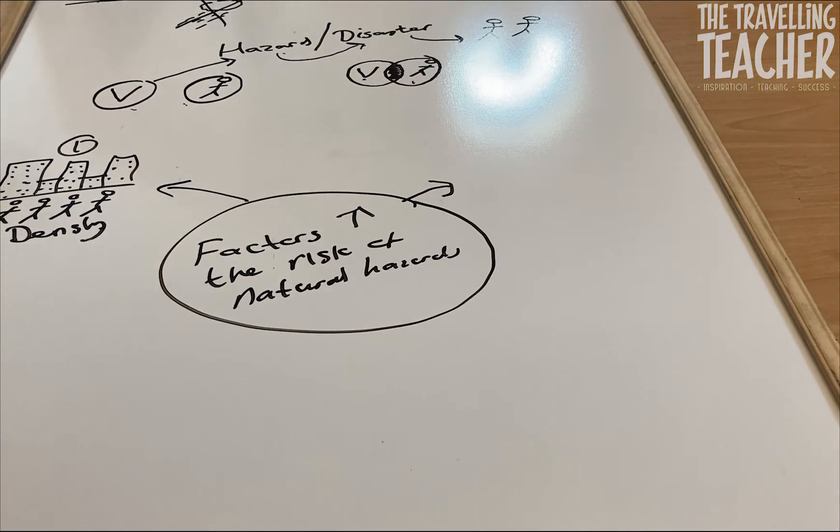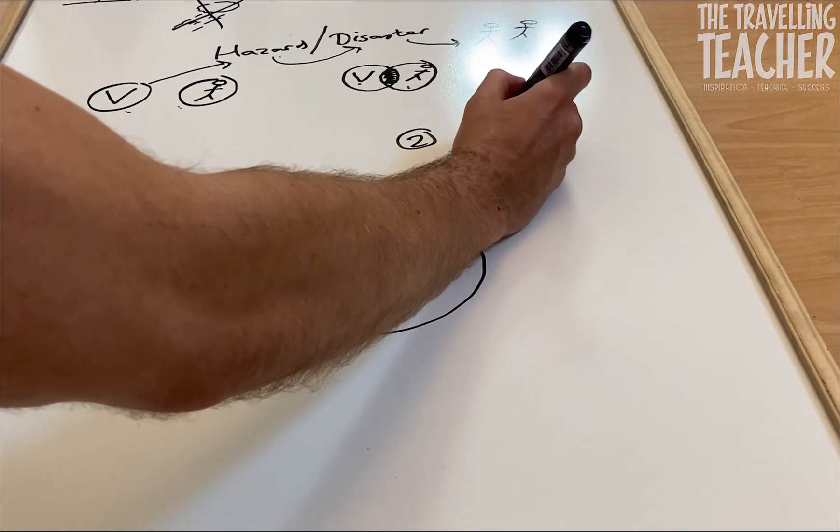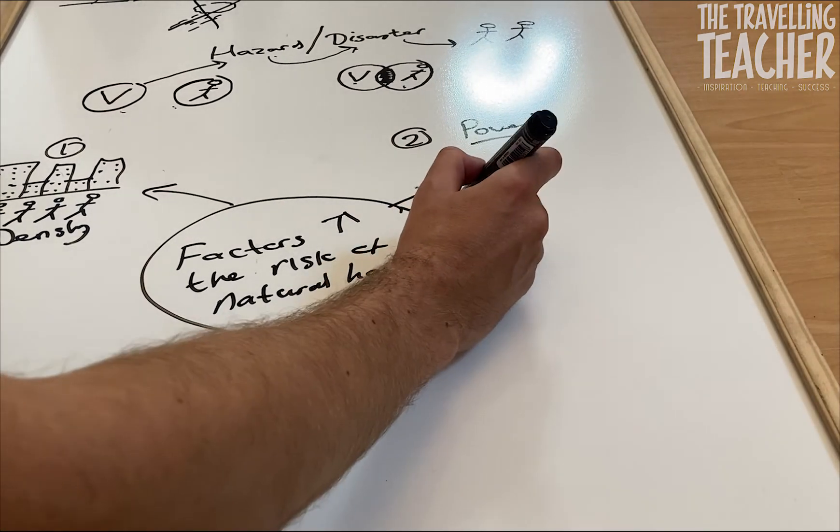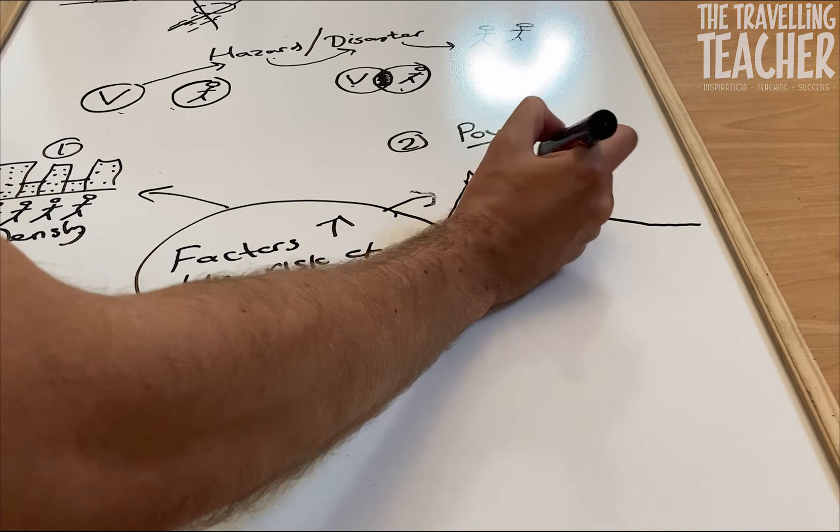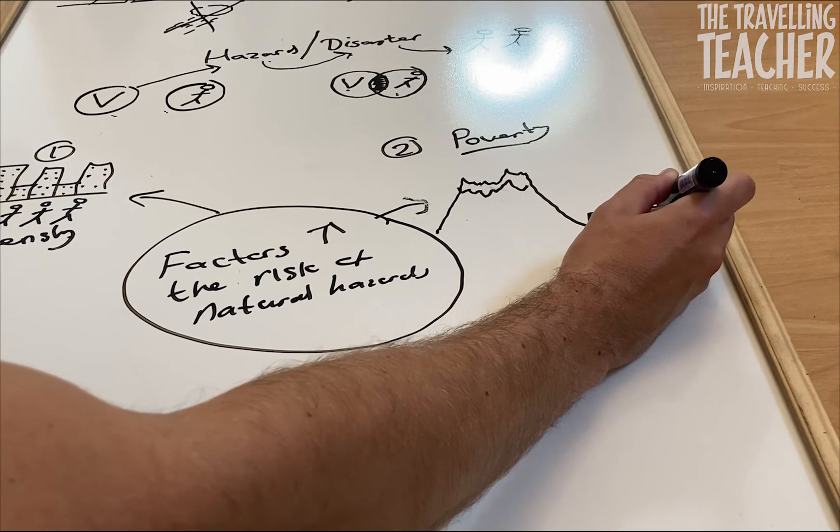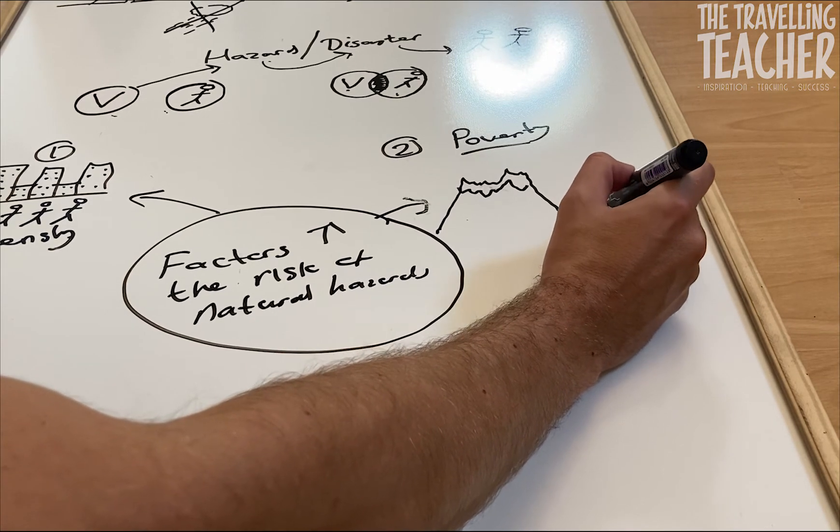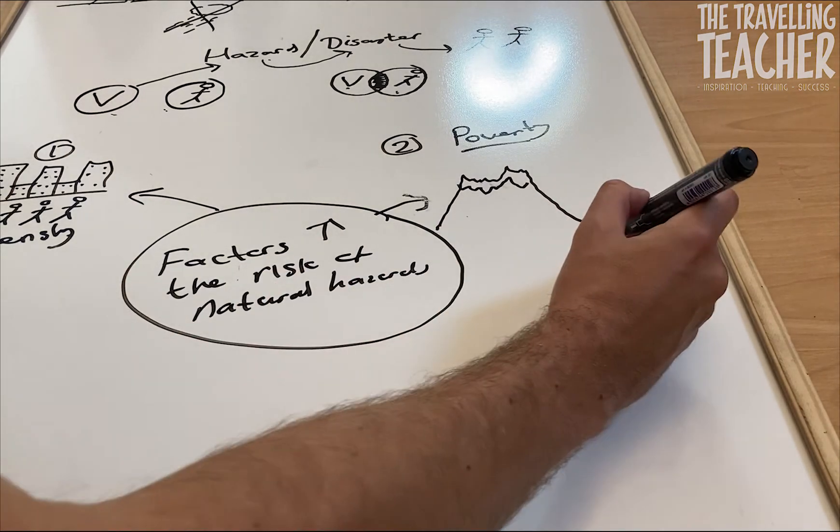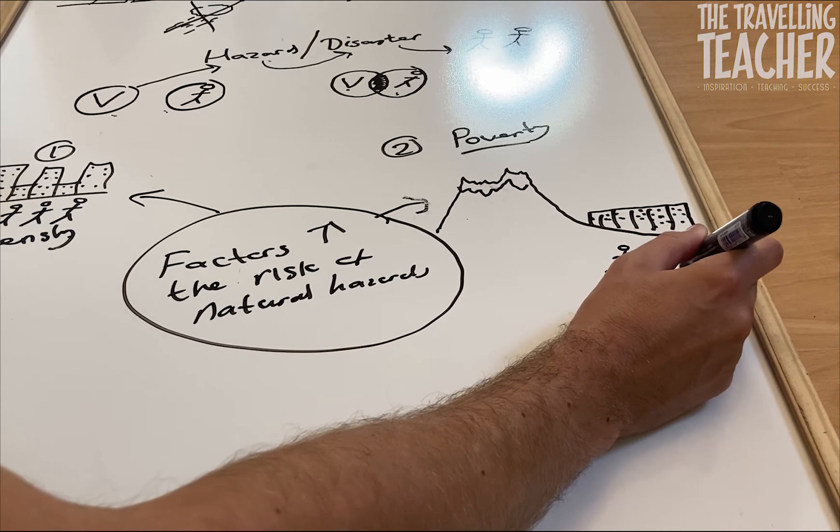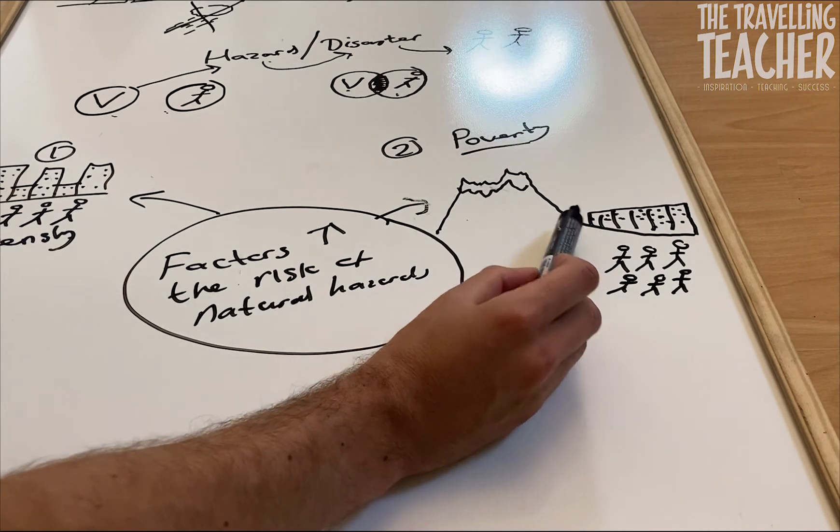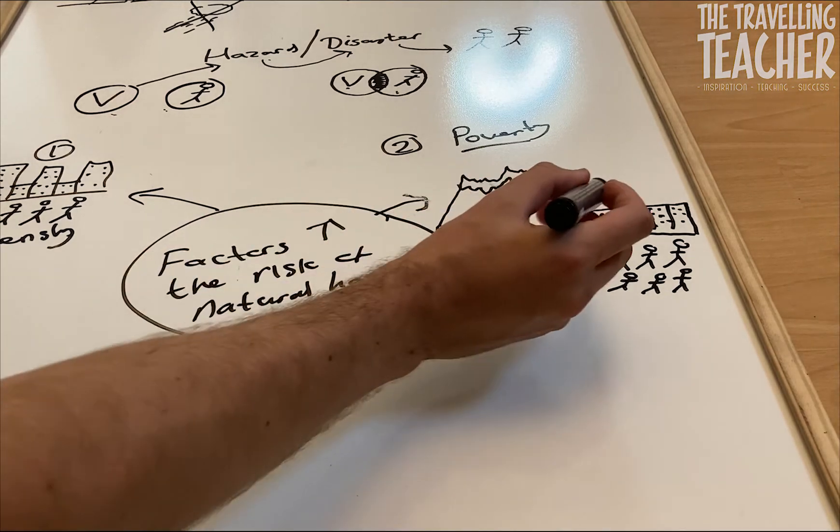Our second factor, we speak about this quite a bit within the AQA specification, our second factor is poverty. And a perfect example of this is, let me draw a, there we go, there's a very poor quality drawn mountain. There's my mountain. Now let's say down here we have an LIC, low income country, and we've got a large settlement down there, large city, so those are my buildings. And as we know with any large urban settlement, especially in LICs, we always have an increase of people moving into that city. However the problem is, as you can see from my brilliant diagram, we've run out of space now to build houses and to build buildings.